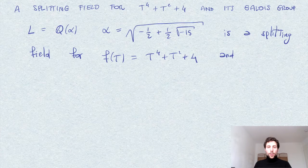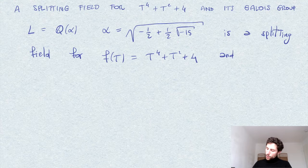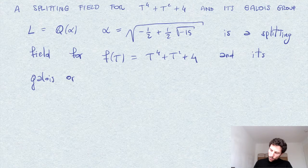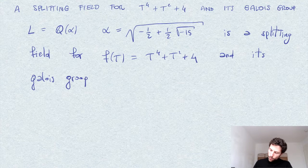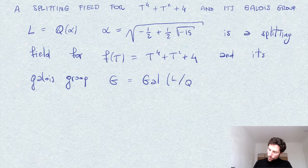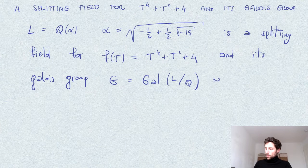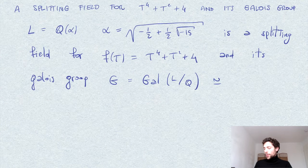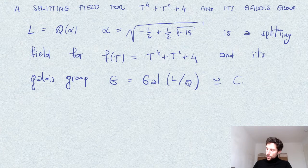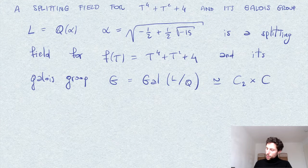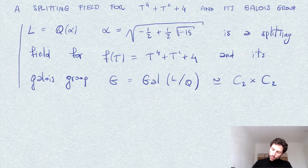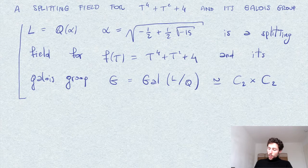And we compute the Galois group of this extension and show that this is isomorphic to a group of order 4 which is not cyclic. So it's a direct product of two cyclic groups of order two. This is what we want to show.